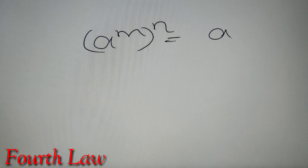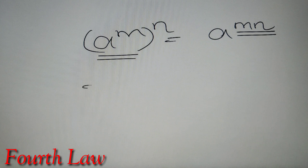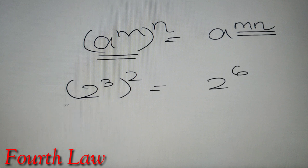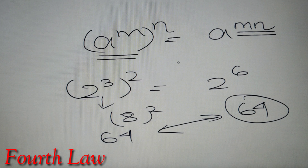The fourth property is also referred to as the power law of indices. It says that if we have A raised to power M and raise it to another power N, then the result is A raised to power MN — the product of both powers. For example, 2 raised to power 3, raised to power 2, equals 2 raised to power 6. Verifying: 8 squared is 64, and 2 to the power 6 is also 64. So A raised to power M, whole raised to power N, equals A raised to power MN.